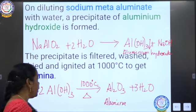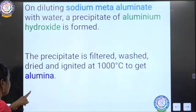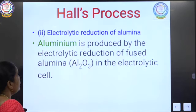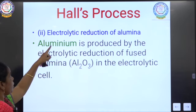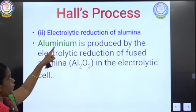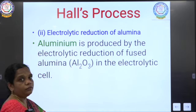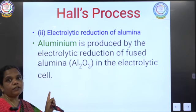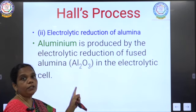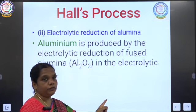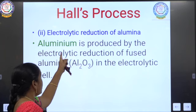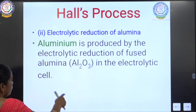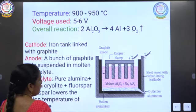Next we are going to learn about the electrolytic process — Hall's process. In Hall's process, we reduce alumina. The alumina is in the form of an oxide, and the oxide form of a metal can be reduced to the metal using an electrolytic cell.